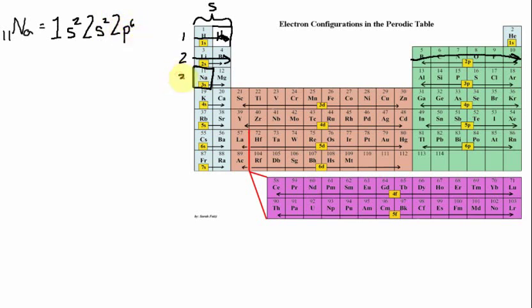Lastly, I need to place my 11th electron. The only place I can do that is the third energy level in the S orbital, and I am 1 deep in the S orbital. So sodium's electron configuration is 1s2, 2s2, 2p6, 3s1. Just so you know, this could also be written as 2s2, 2p6, since the S and P orbitals are both in the second energy level — they're connected.